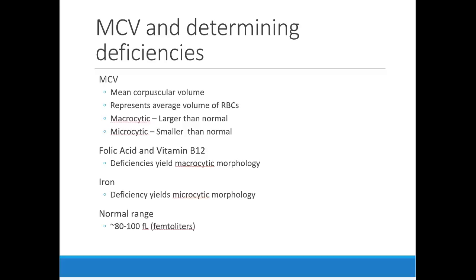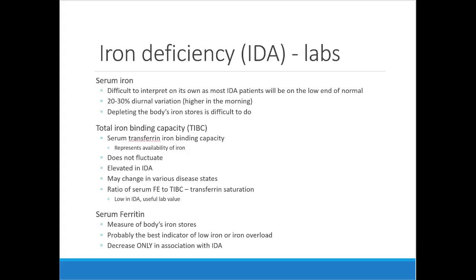To diagnose the type of anemia, we look at mean corpuscular volume (MCV), which represents the average volume of a red blood cell. Macrocytic MCV means blood cells are larger; microcytic means they're smaller. A macrocytic morphology likely indicates deficiency in folic acid and B12, while a microcytic morphology likely indicates iron deficiency. We use these lab values to target therapy — just giving someone iron isn't appropriate if their morphology isn't indicative of microcytic anemia.